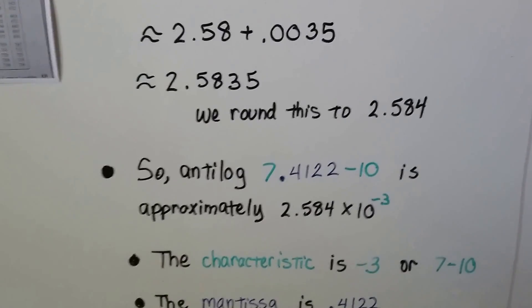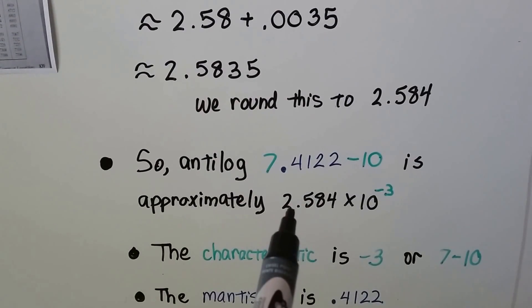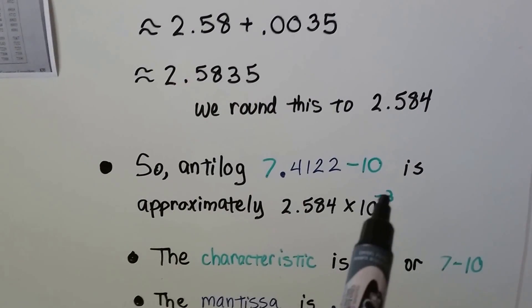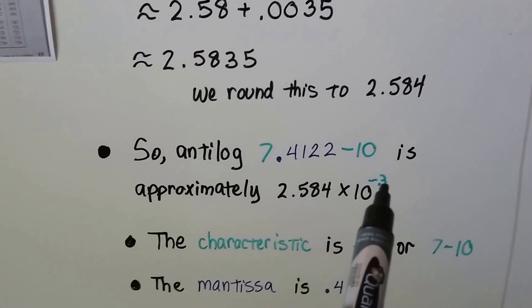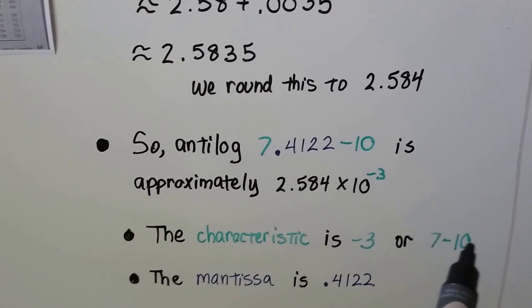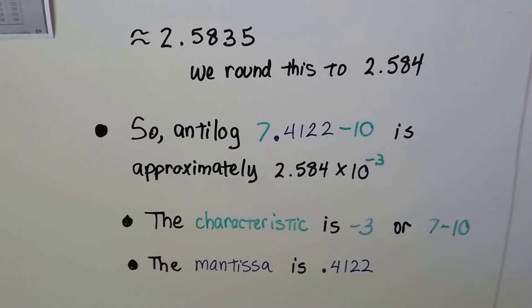So, the anti-log of 7.4122 minus 10 is approximately 2.584 times 10 to the negative third in scientific notation. We can see the characteristic is a negative 3. That's that 7 minus 10. We can see the mantissa is .4122.